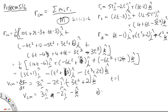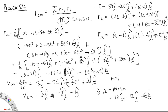Part B asks us to find the momentum of the system at t equals 1. The momentum of the system is just equal to the total mass times the velocity of the center of mass. Multiplying by 6 gives us 18i minus 12j minus 6k as the total momentum for the system.